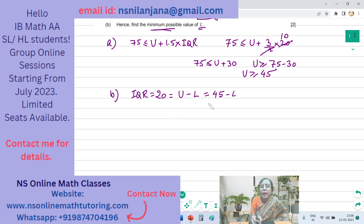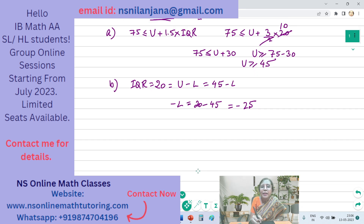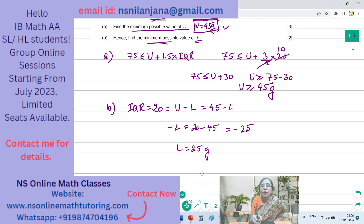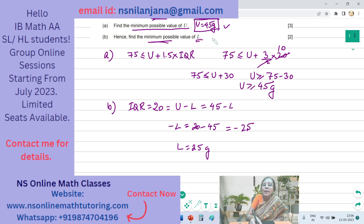Subtracting 45 from both sides, we get minus L is equal to 20 minus 45, which is equal to minus 25. Therefore L is equal to 25 grams. So the answer is L is equal to 25 grams.